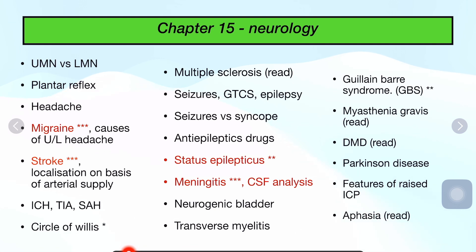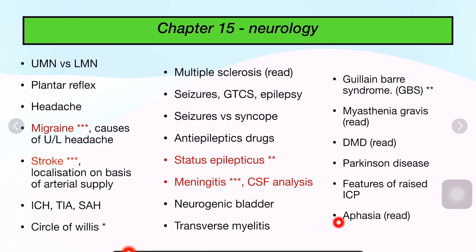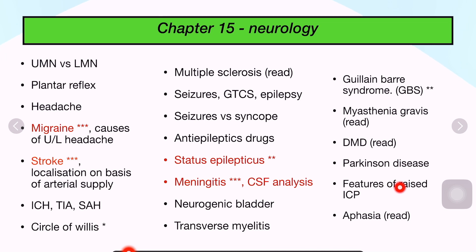Further neurology topics: defense table, anti-epileptic drugs, status epilepticus, meningitis, CSF analysis, neurogenic bladder, GBS, myasthenia gravis, DMD, Parkinson's, and features of raised ICP. The four very high-yield topics are: migraine, stroke, status epilepticus, and meningitis. Meningitis is very frequently asked, even in Pedia. CSF table is very important — know bacterial, viral, fungal, and tuberculous causes.